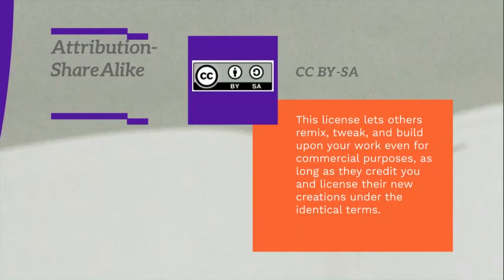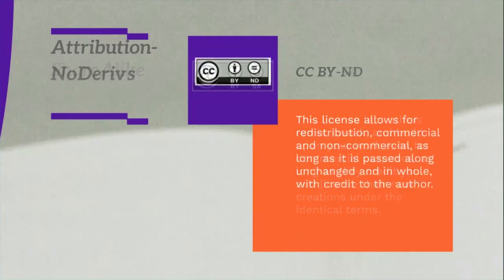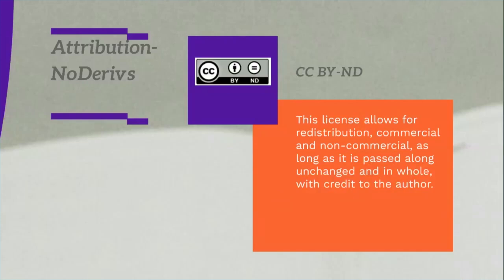Third is CC BY-ND, which stands for Creative Commons, BY attribution, and Non-Derivative. This license allows for redistribution, commercial and non-commercial, as long as it is passed along unchanged and in whole with credit to the author. That means you cannot make any changes in the original work.